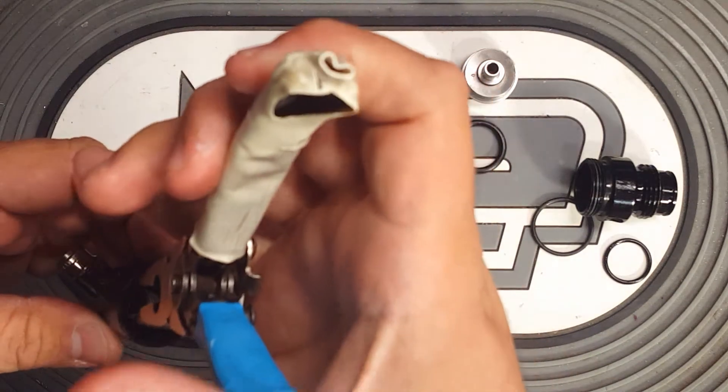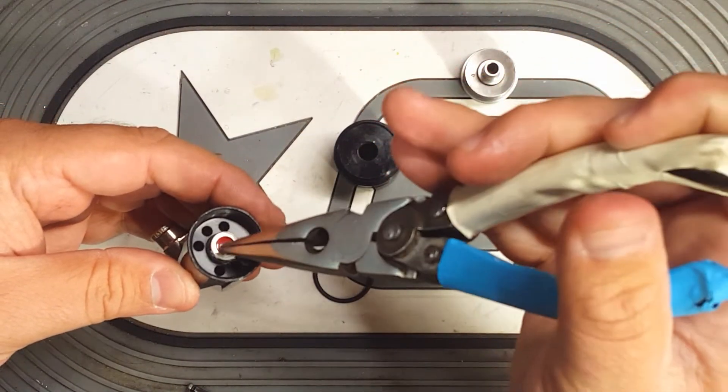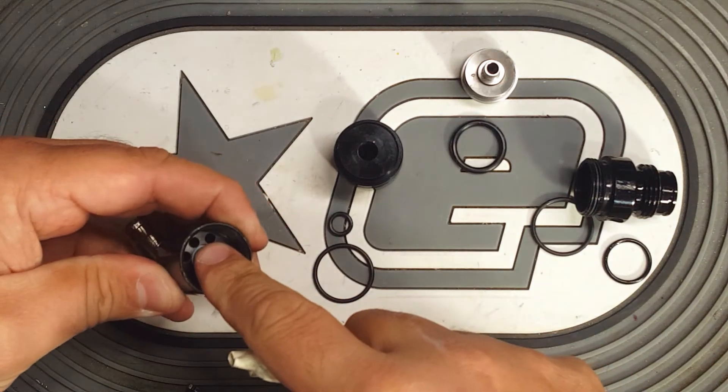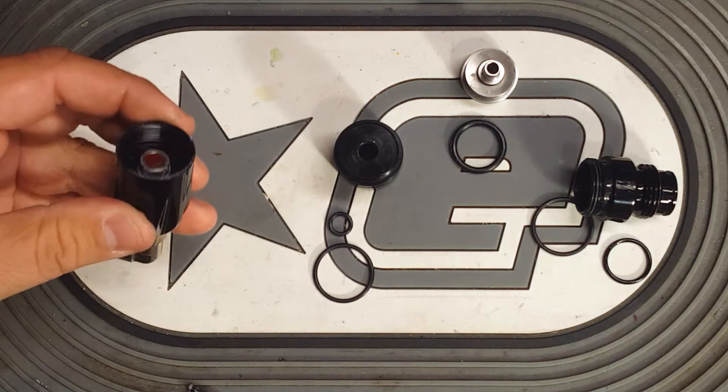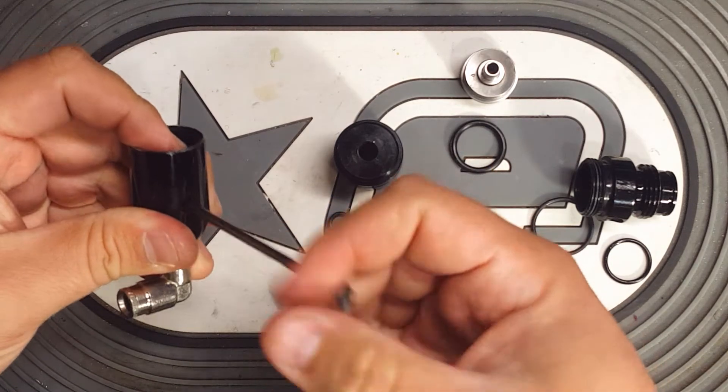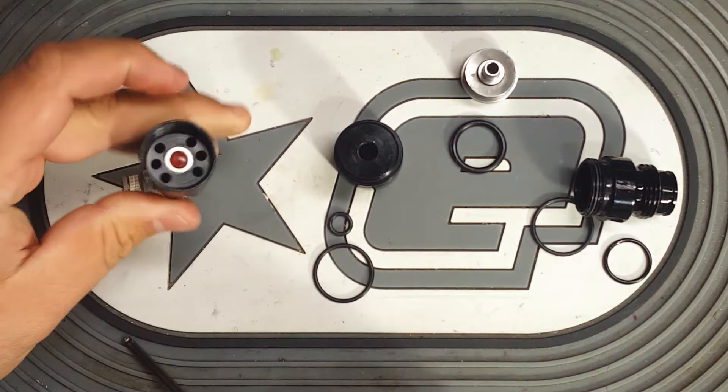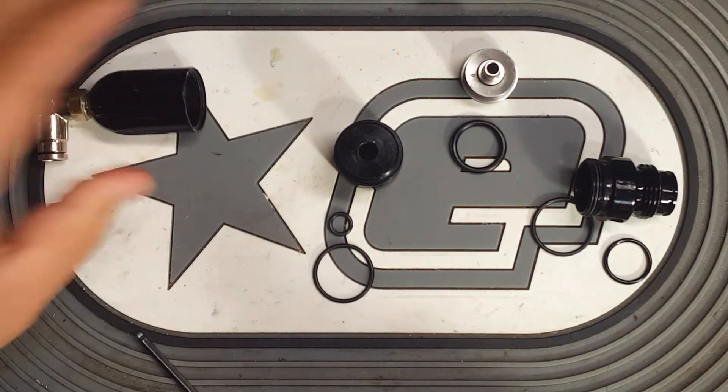Easiest way to do it is grab it with a set of pliers, just lower it down so you know it's indexed properly, and push it in with your finger. And then you can push it down with one finger and then slowly let the screw back out so that it lowers itself into the body like that. Now that's done.